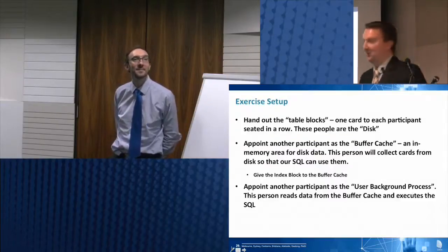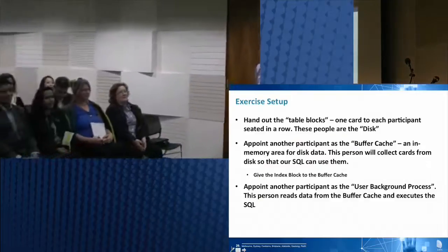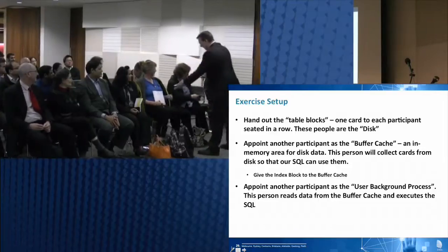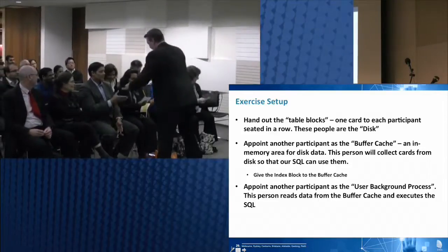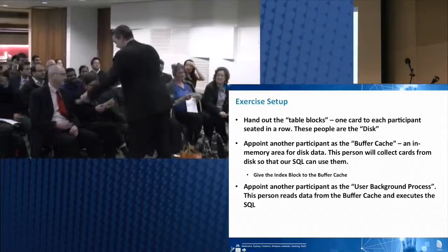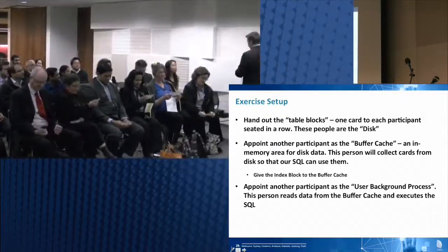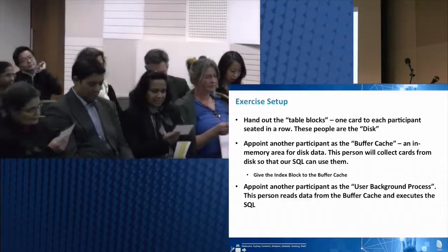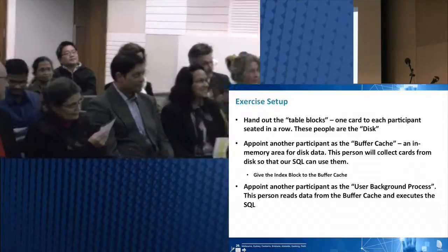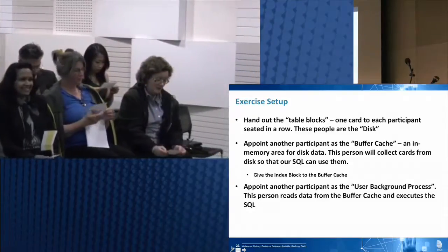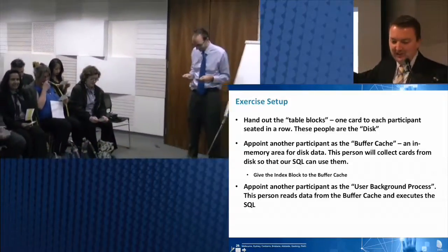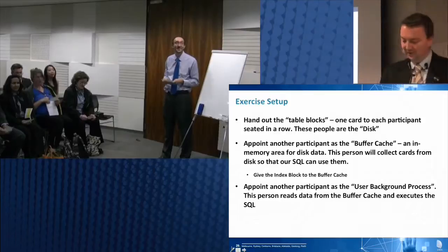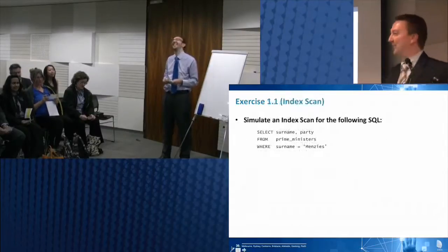So I'm going to hand out the table blocks here. I've got one, two, three, four, five, and six - can you pass those down please? Keep seven for yourself. Seven, eight, nine, ten, eleven, and twelve. So I've handed out my table blocks. I've appointed another participant as the buffer cache. I'm going to be the user background process - most responsible role. When you're running a job on Oracle there's a process running on the CPU, that's the user background process. It's the thing that's doing all the work.